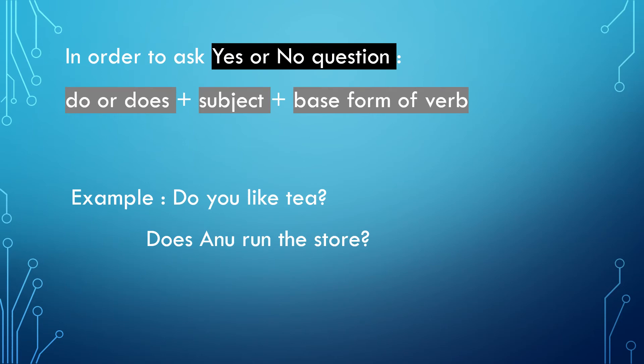In order to ask a yes or no question, the form goes like: do or does, plus the subject, plus the base form of the verb. For example: 'Do you like tea?' Here, 'do' is added along with the subject 'you' and the base form of the verb 'like,' in order to make the sentence in the simple present tense.